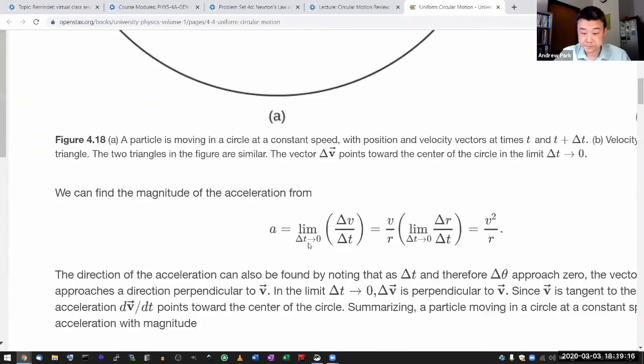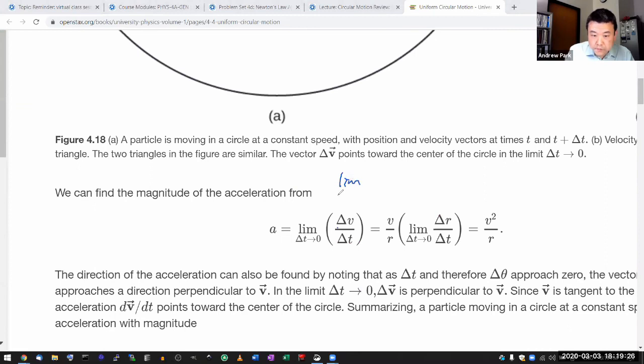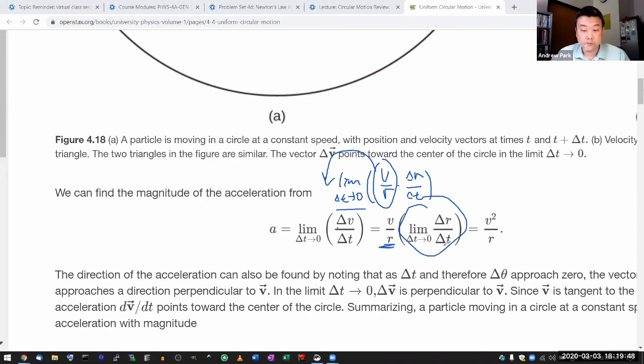It's equal to, and they are plugging in what they derived for delta v there, v over r times delta r. So what they initially had is the limit of delta t going to zero, v over r times delta r over delta t. And this v over r, it's not affected by this limiting procedure, that's why they are able to take it out to get this. And they have this limit of delta r over delta t, and that is velocity again. They write this as v and they end up with v squared over r.